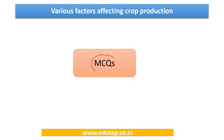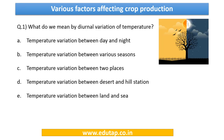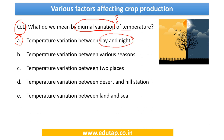Now let us discuss MCQs related to the topic. The first question asks: what do we mean by diurnal variation of temperature? The options are: temperature variation between day and night; between various seasons; between two places; between desert and hill station; or between land and sea. The correct answer is A — diurnal variation of temperature means the temperature variation that exists between the day and night of a particular day.